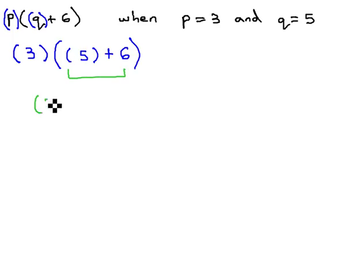Doing the parentheses first, 5 plus 6 is 11, and finally multiplying last, 3 times 11 is 33, to get our solution.